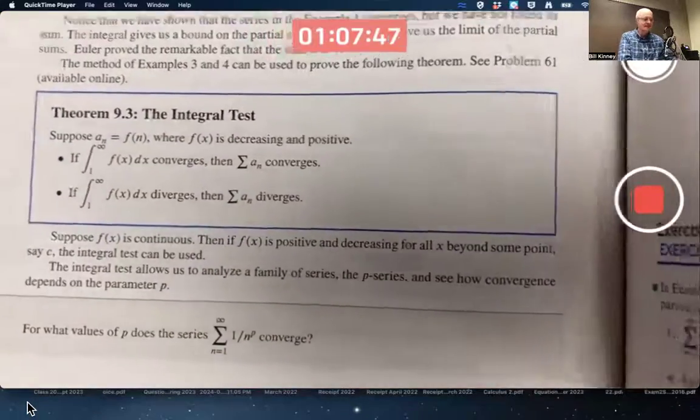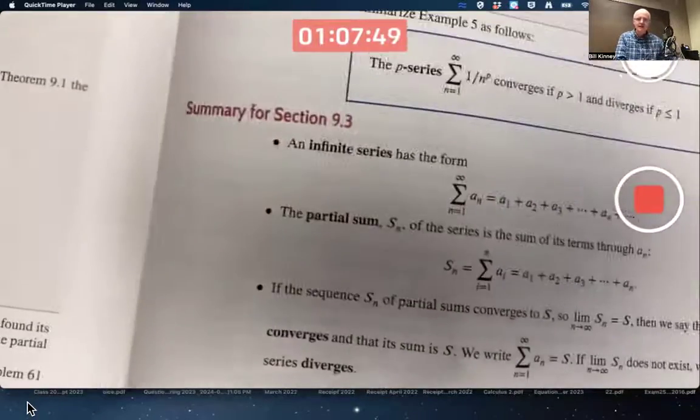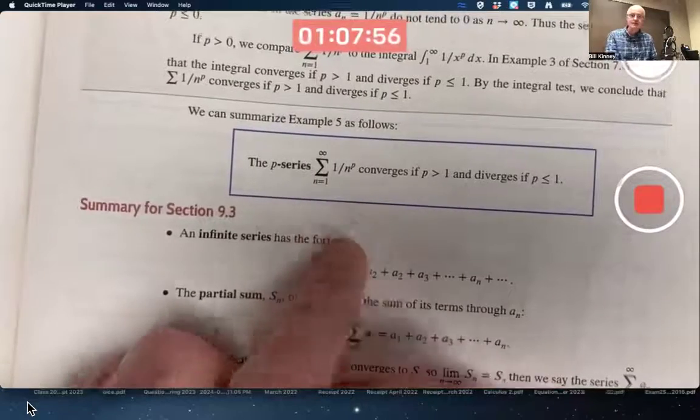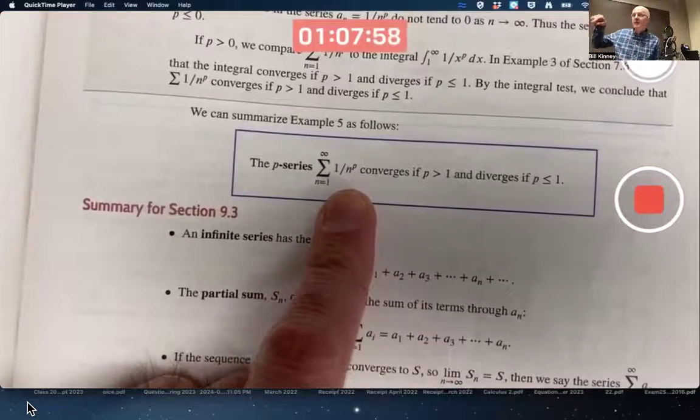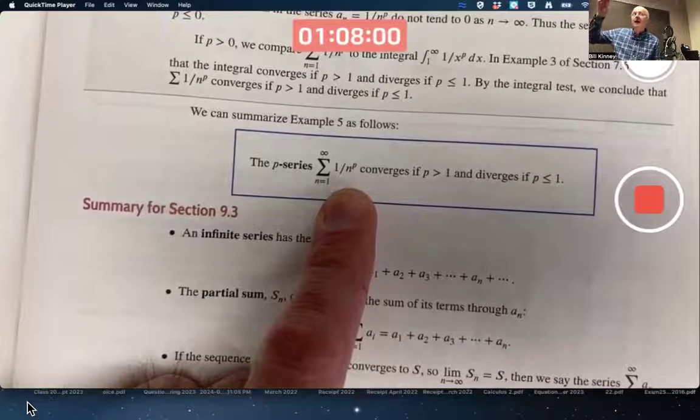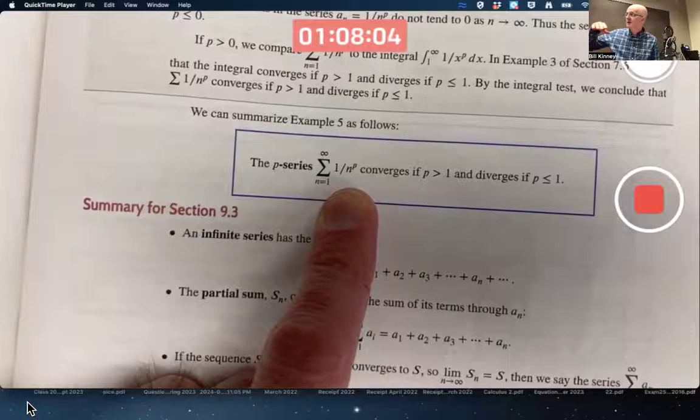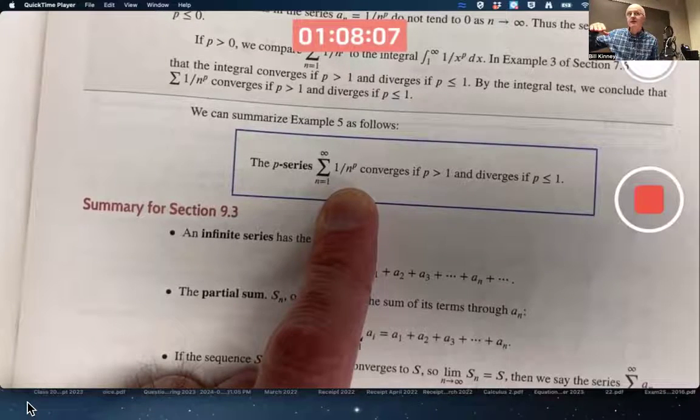One very important case for this is for p series. This is the analog of the corresponding factor improper integrals. We knew the improper integral from 1 to infinity of 1 over x to the p converged when p was bigger than 1 and diverged when p is less than or equal to 1.